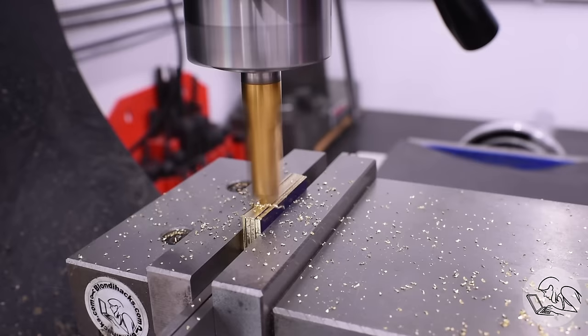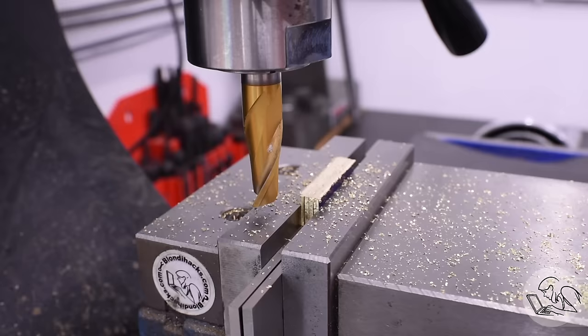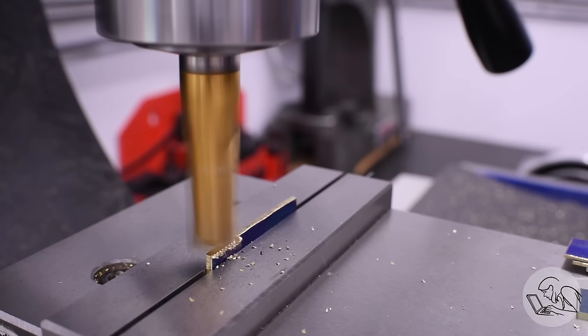I started by gang milling all of the pieces together to create one reference surface on all of them, and then I went back in and milled each piece to the dimension it needs to be one at a time. I do figure out a quicker way to do this in a moment, but for now, this is how I did it.